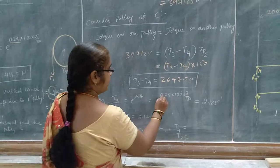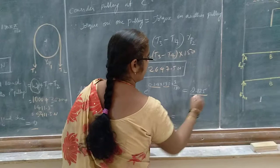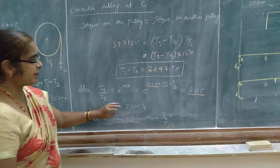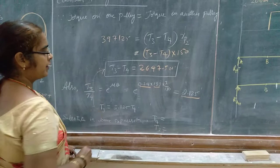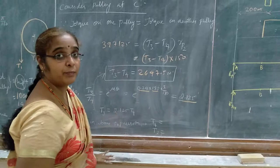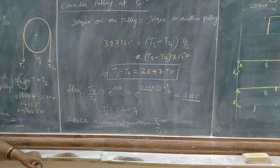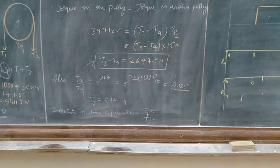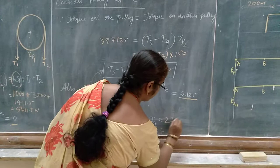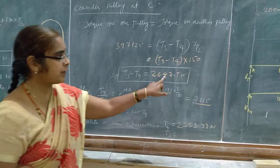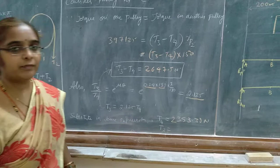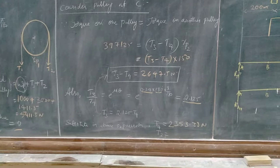We also know that T3/T4 = e^(mu*theta). With mu = 0.24 and theta = 180 degrees (converted to radians), we get e^(mu*theta) = 2.125, so T3 = 2.125 × T4. Substituting into T3 - T4 = 2647.5, we get 2.125*T4 - T4 = 2647.5, which simplifies to 1.125*T4 = 2647.5. Solving, T4 = 2353.33 N. Then substituting back, T3 = 2.125 × T4, giving us the value of T3.